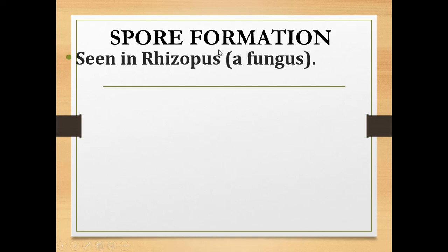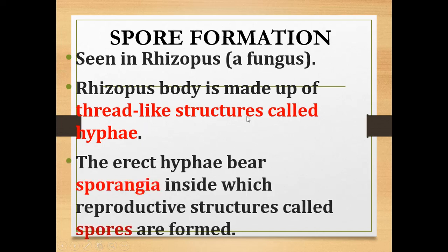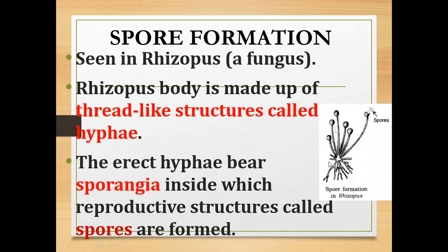What is meant by spore formation? Spore formation is mainly seen in organisms such as Rhizopus. Rhizopus is a fungus. Its body is made up of thread-like structures called hyphae. Here you can see the diagram of Rhizopus. The erect hyphae form a ball-shaped structure called sporangia.